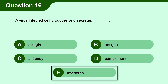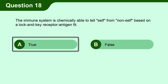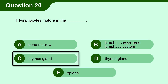Question 16. A virus-infected cell produces and secretes E. Interferon. Question 17. An antigen is usually a protein or polysaccharide chain of a glycoprotein molecule that the body recognizes as non-self. Question 18. The immune system is chemically able to tell self from non-self based on a lock and key receptor antigen fit. A. True. Question 19. B lymphocytes mature in the bloodstream. B. False. Question 20. T lymphocytes mature in the C. Thymus gland.